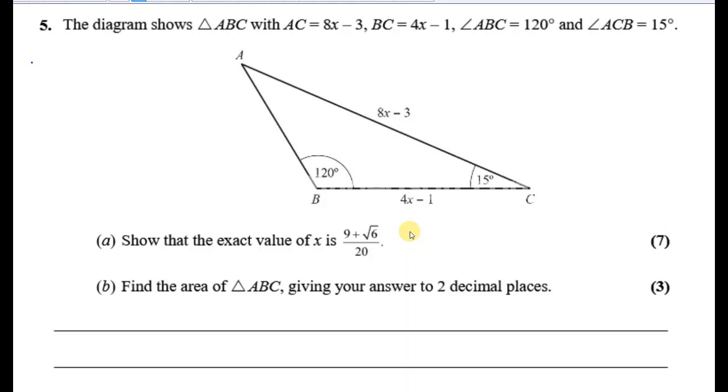We can see here that we're given a question where we're told some of the sides and angles in a triangle ABC, and we have to show that the exact value of X is 9 plus root 6 over 20. So what we've got to do is the following. We know these pieces of information and we need to find that the exact value of X is 9 root 6 over 20.